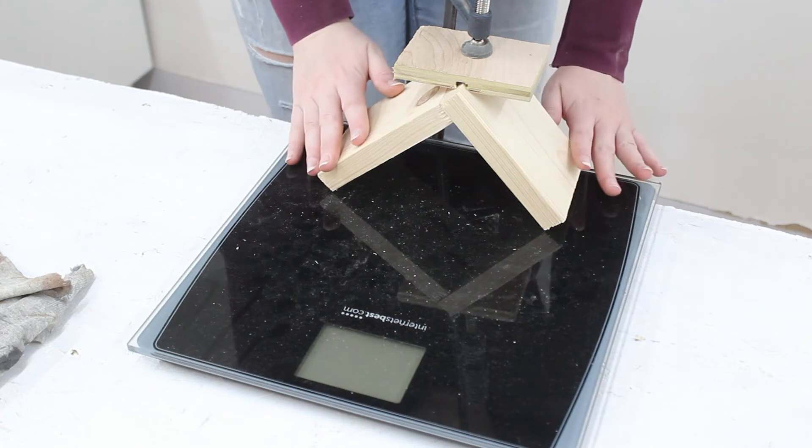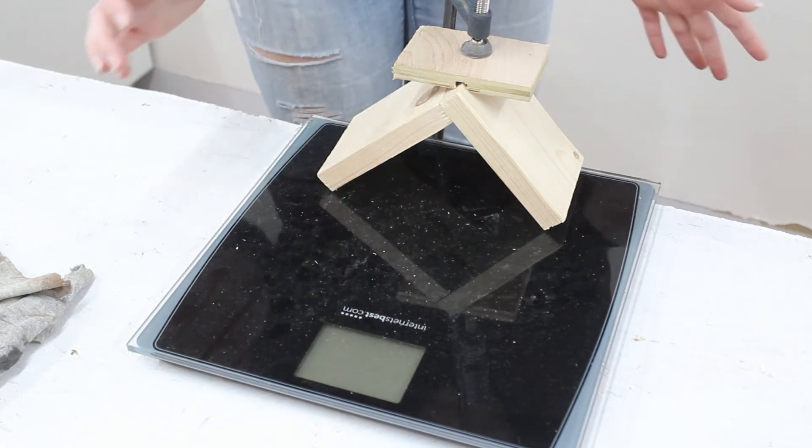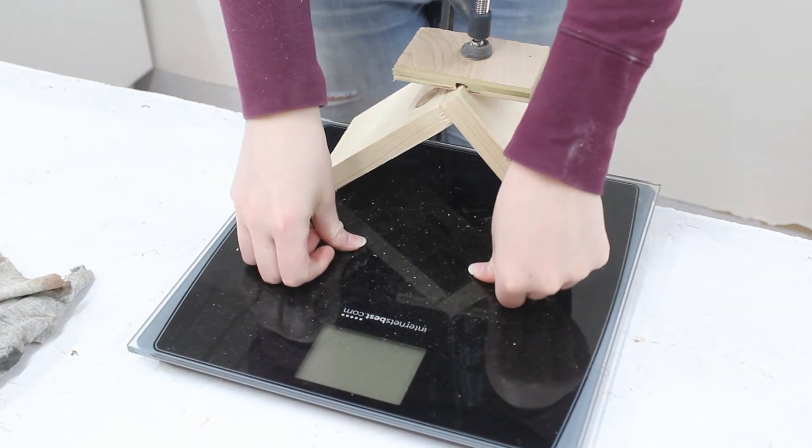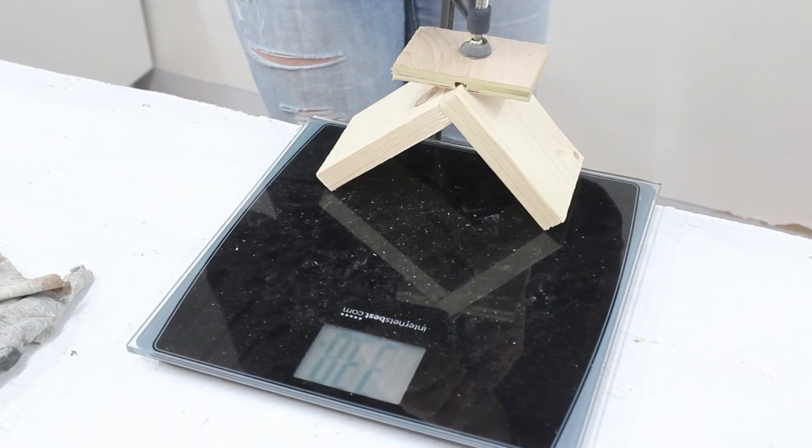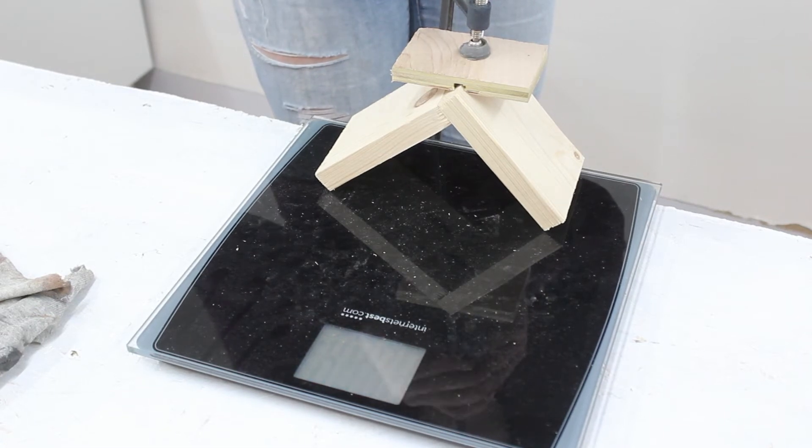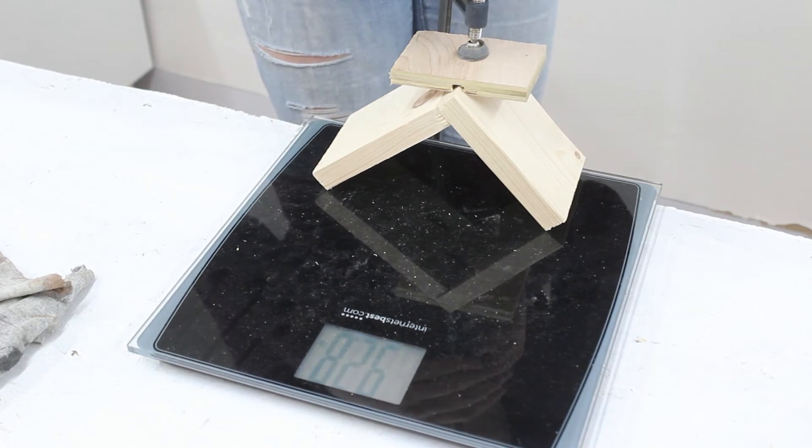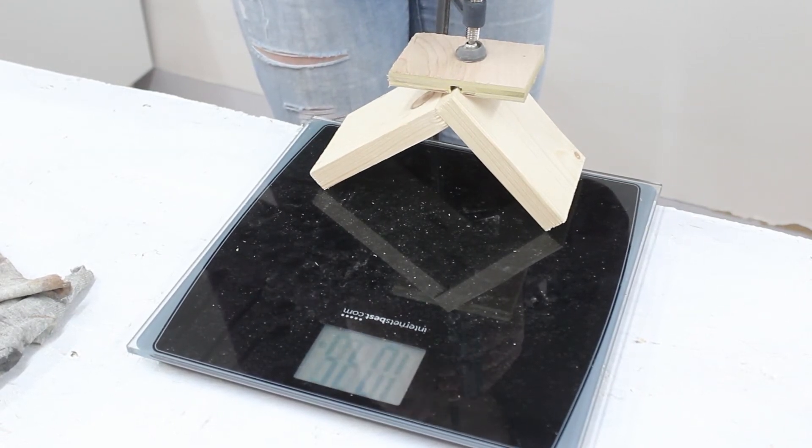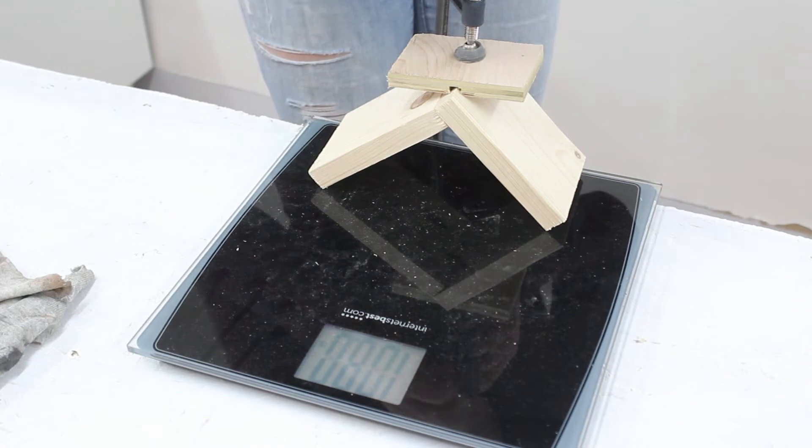All right. So we are back with the last one. This is the joint that has two pocket hole screws. There is no glue on this one, just the two pocket hole screws. So at the moment we've got about 21 pounds of force, 33 pounds, 41 pounds, 50 pounds, 68 pounds, 82 pounds, 90 pounds, 93 pounds, 100 pounds, 100 pounds, 108 pounds.